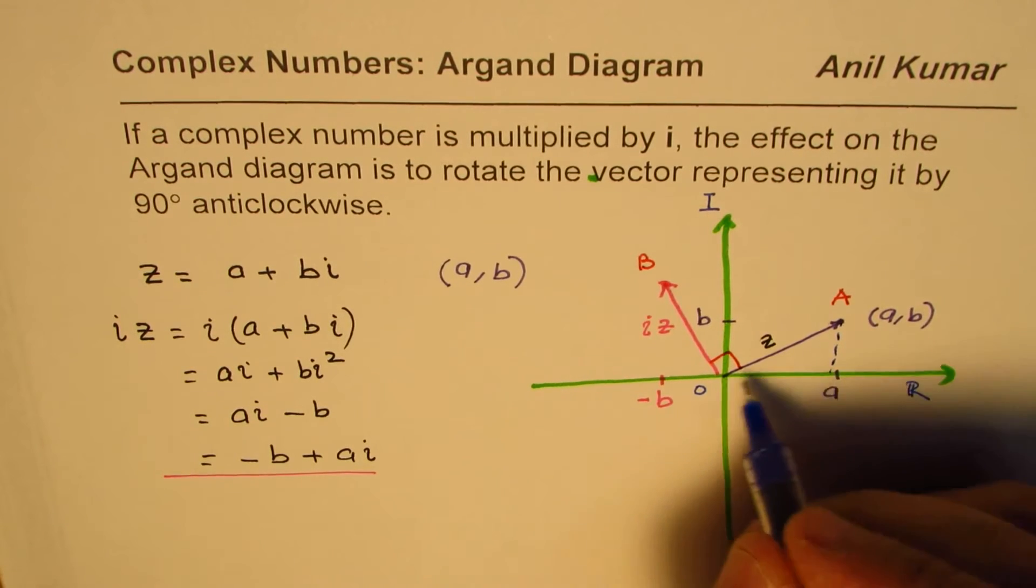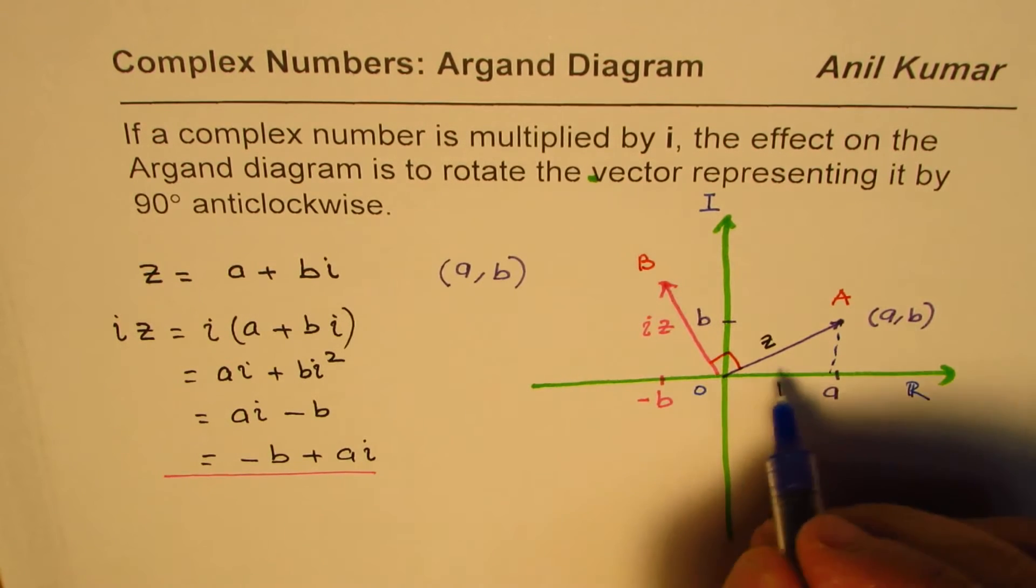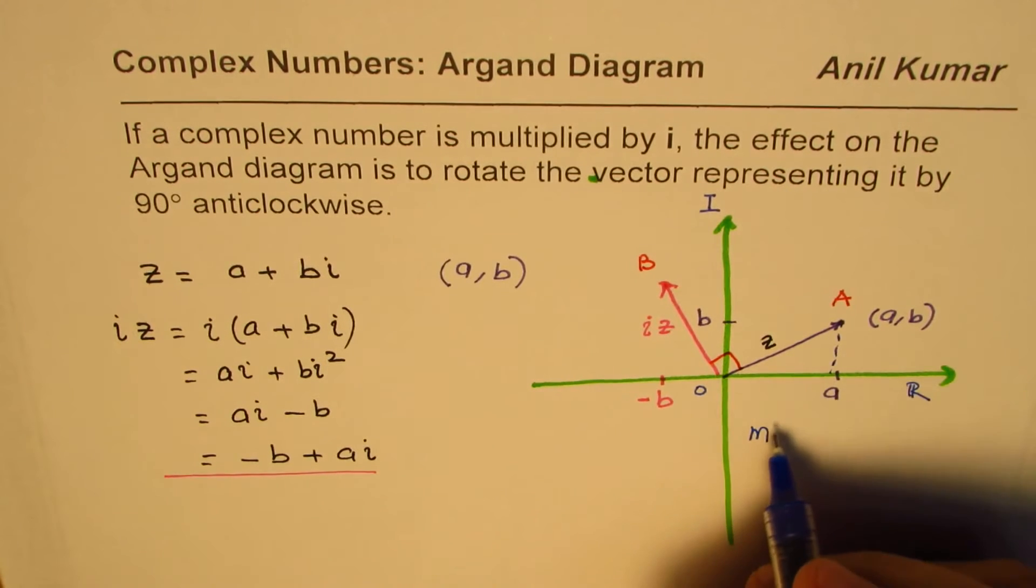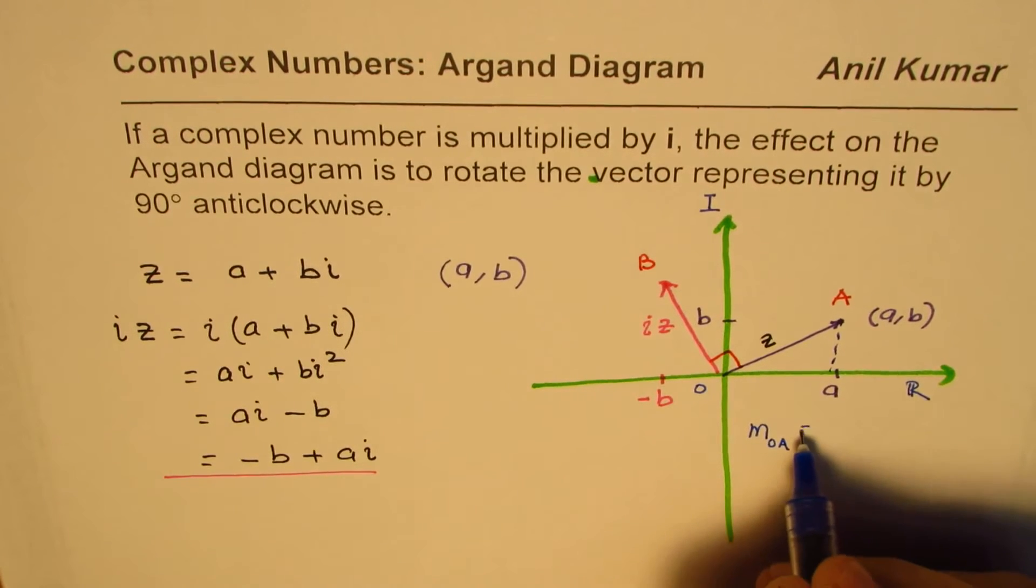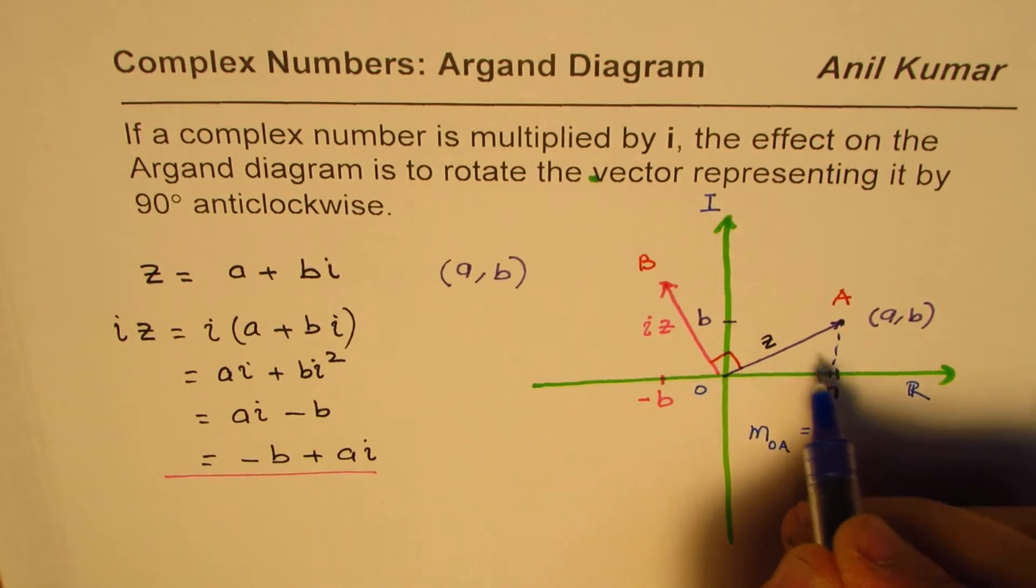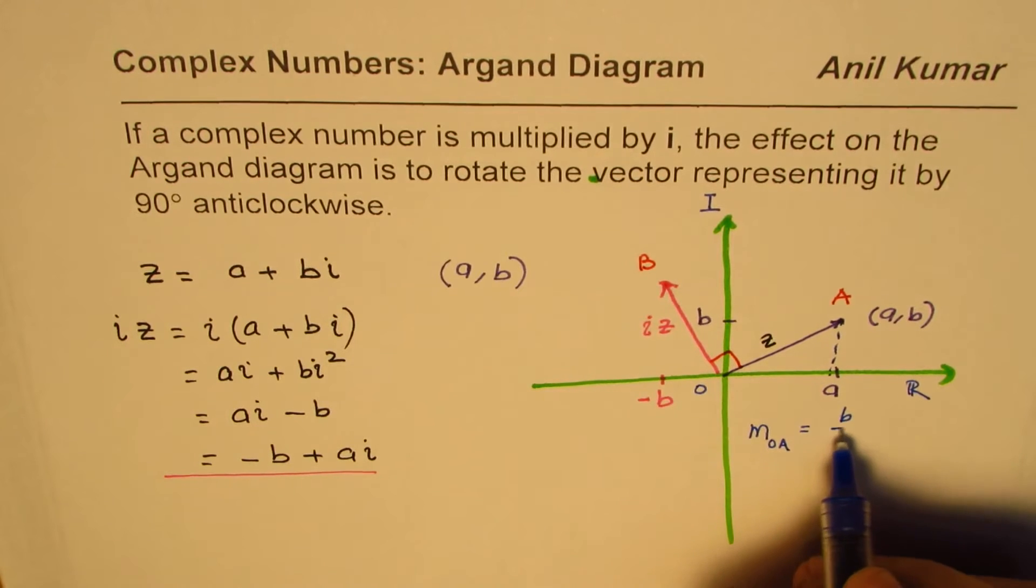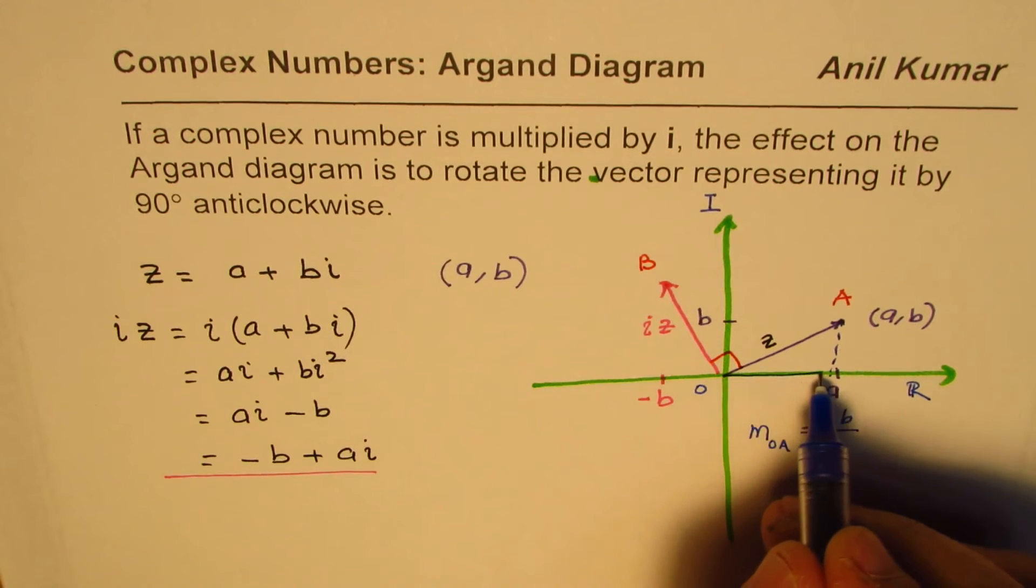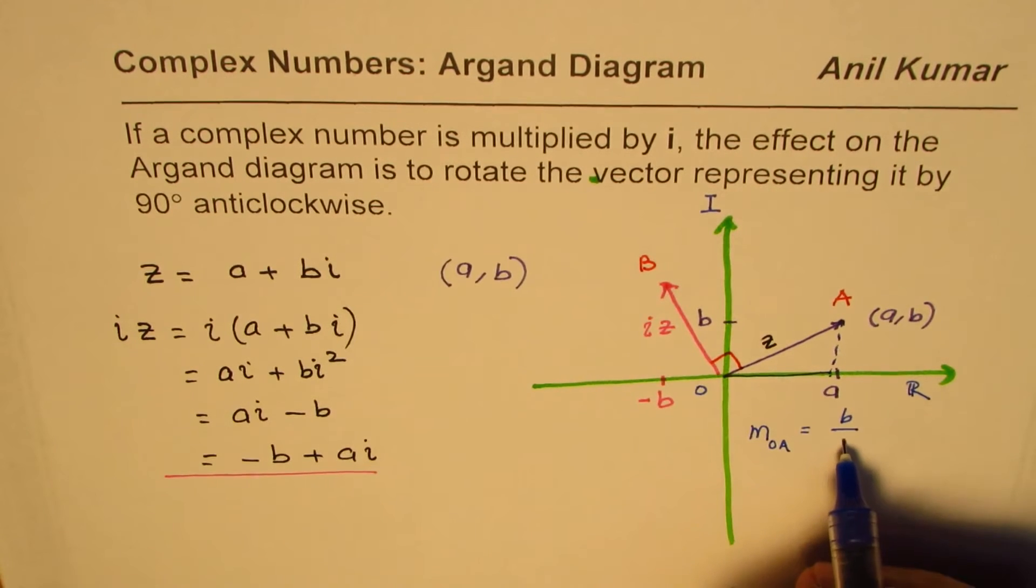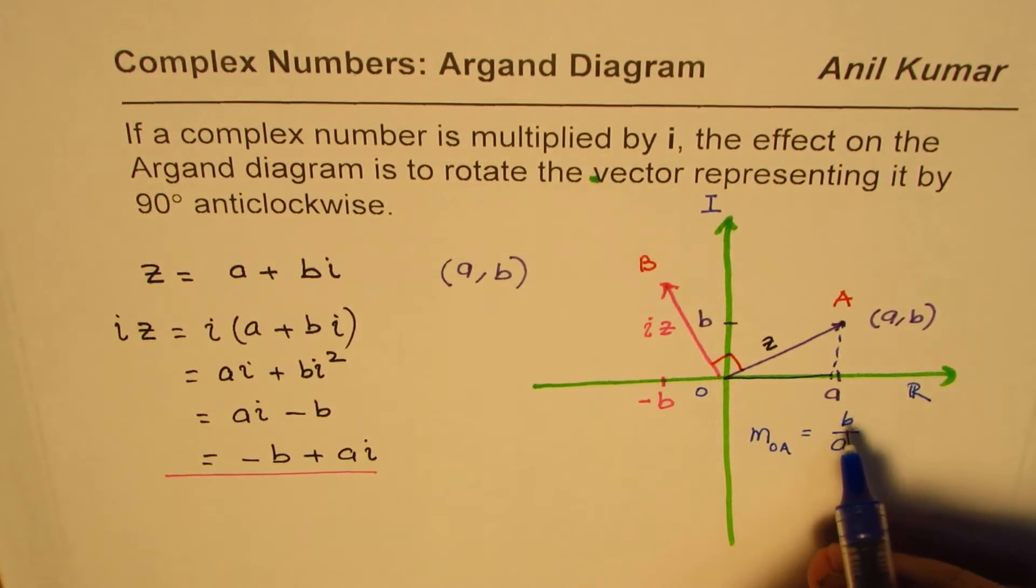So, the slope of this line is, let's say slope m of the first vector, where say OA is equal to the height, this is the opposite side, which is equal to b over the base, which is the real coordinate, a, right? So, the slope is b over a.